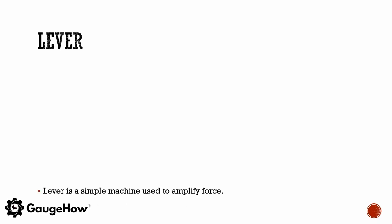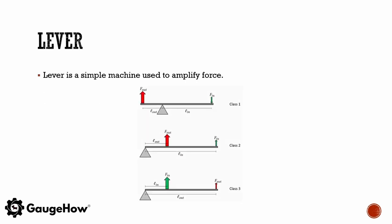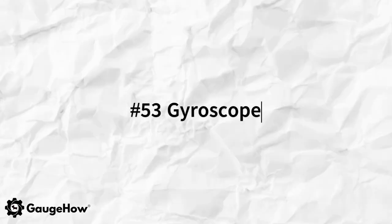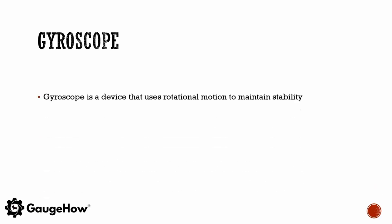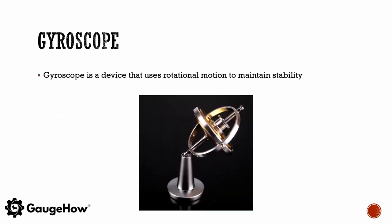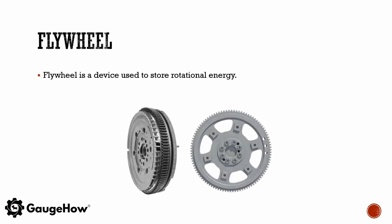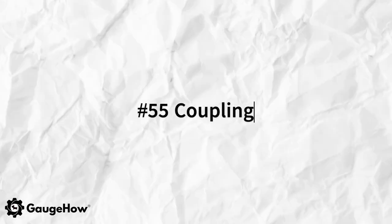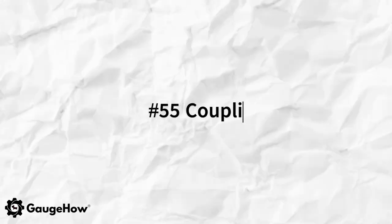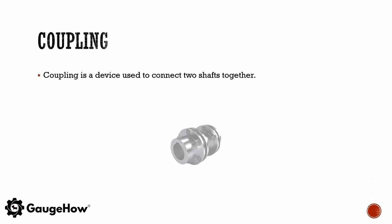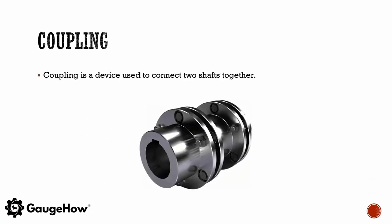A lever is a simple machine used to amplify force. A gyroscope is a device that uses rotational motion to maintain stability. A flywheel is a device used to store rotational energy. A coupling is a device used to connect two shafts together.